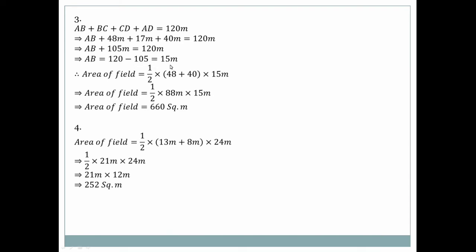Area of field = half × (a + b) × h = half × (48 + 40) × 15 = half × 88 × 15 = 660 square meters.